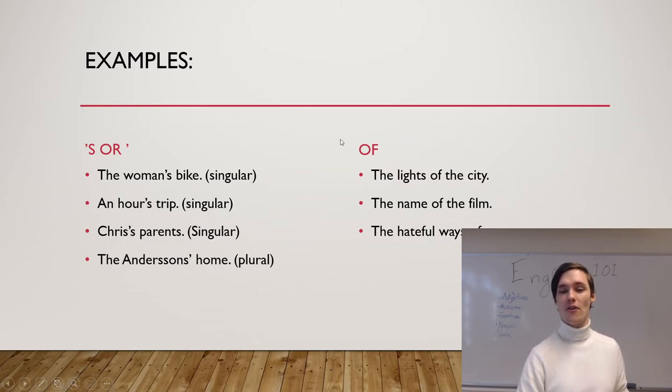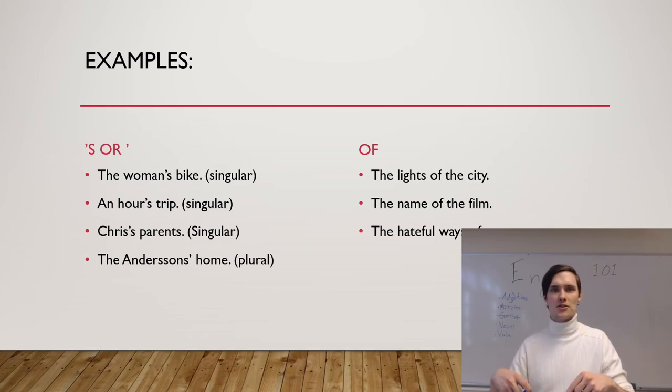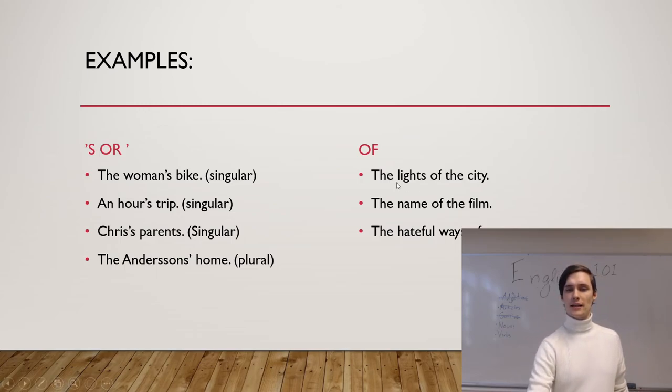Now the other one, when we have 'of': the lights of the city, the name of the film, the hateful ways of grammar. All these things show who owns something. It belongs to whom was the question we asked in the beginning. Who owns the lights? It's the lights of the city. The name of the film - the name belongs to the film. The hateful ways belong to grammar, or the bike belongs to the woman, or the parents belong to Chris. It sounds weird but that's how it works grammatically.